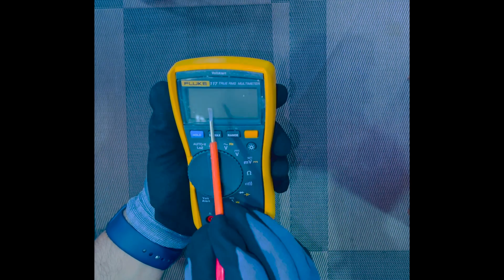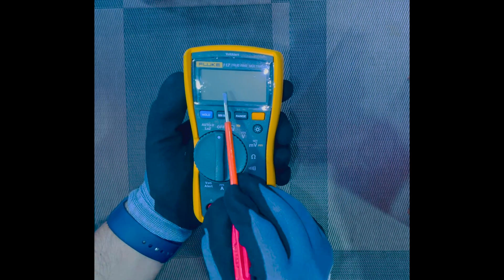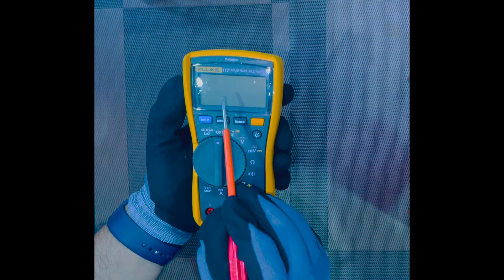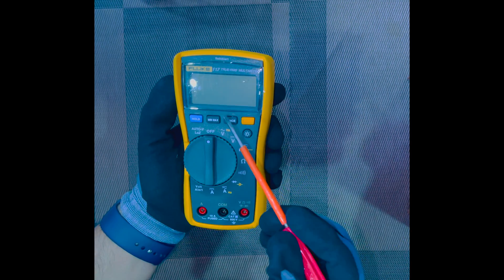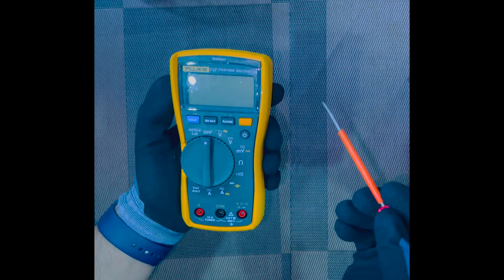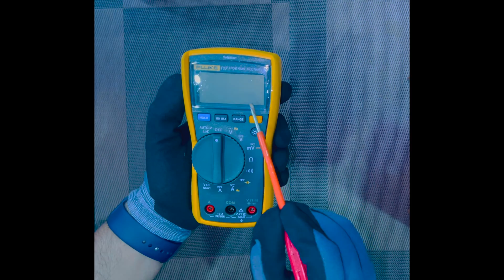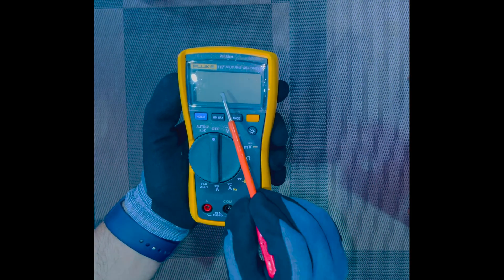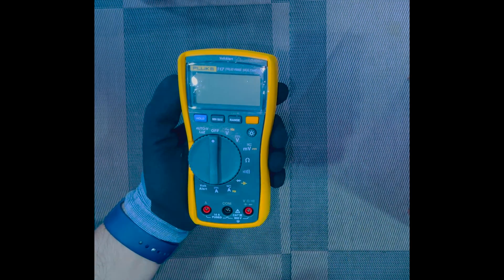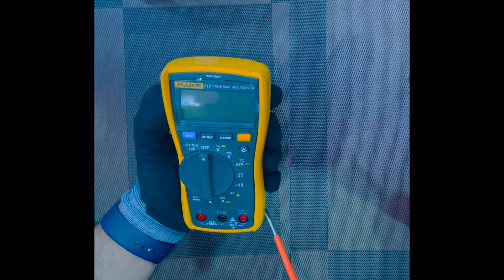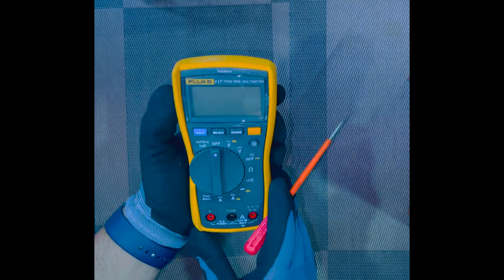The digital screen on your Fluke multimeter will show us the units, the scale, and the other visual information about our measurements. Whatever we are going to measure is going to come on this part of the meter which is called the screen.